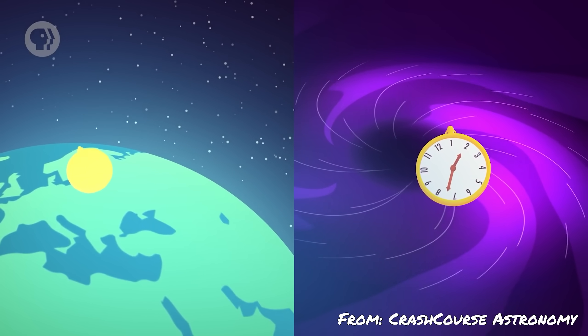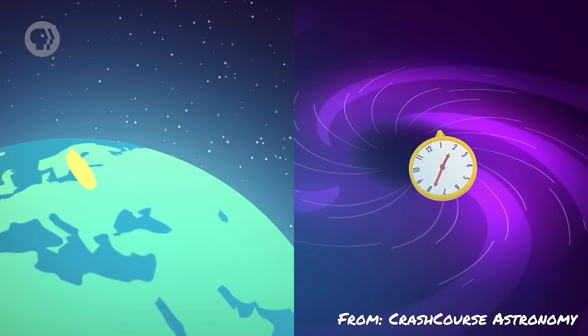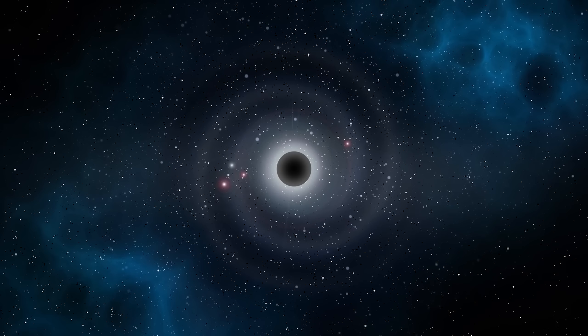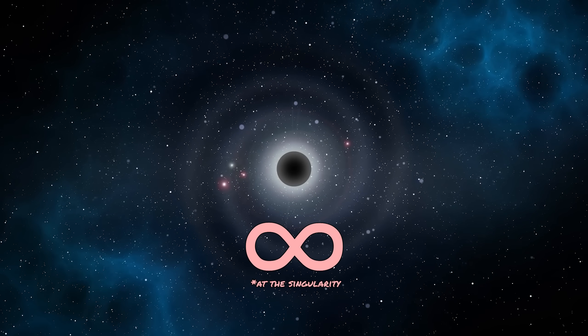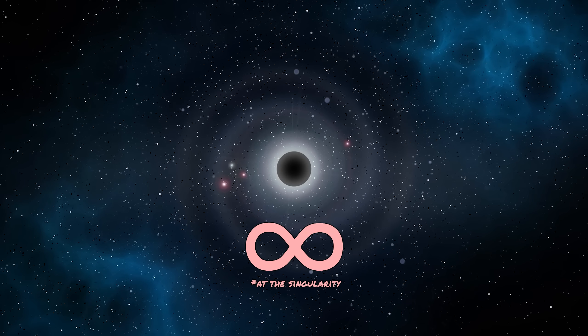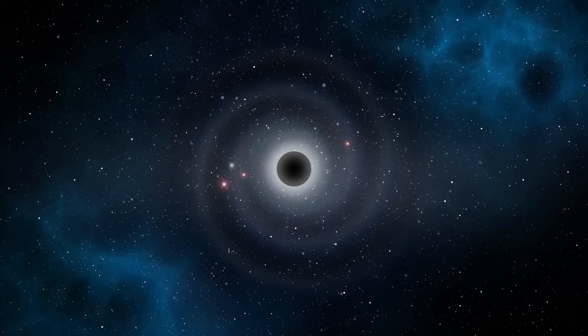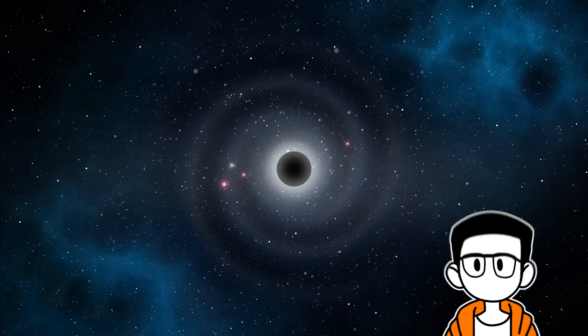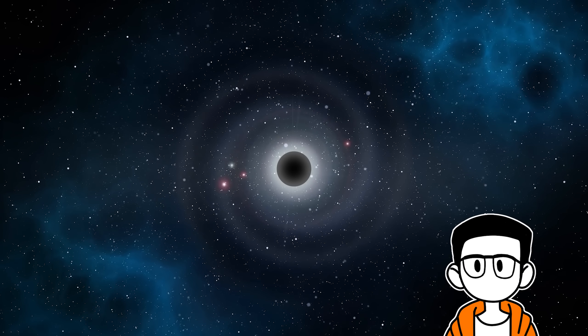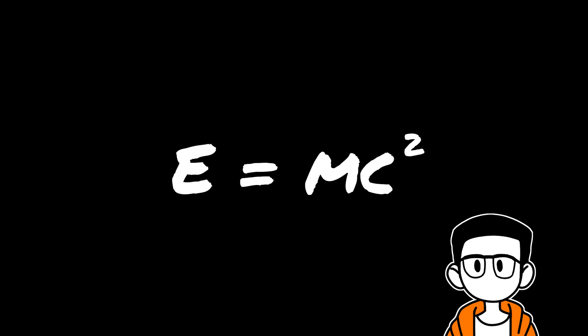And if you guys have ever heard of the famous equation E equals mc squared, it's actually part of Einstein's mass-energy equivalence theorem that states that mass and energy are two sides of the same thing. It actually stands for energy equals mass times the speed of light squared, implying that mass and energy are also part of a dual physics system just like space and time and electricity and magnetism.